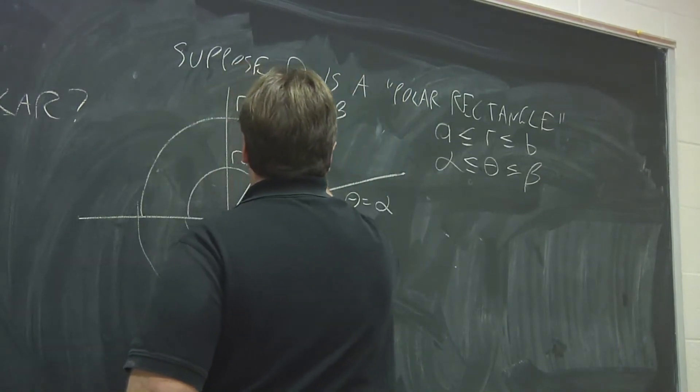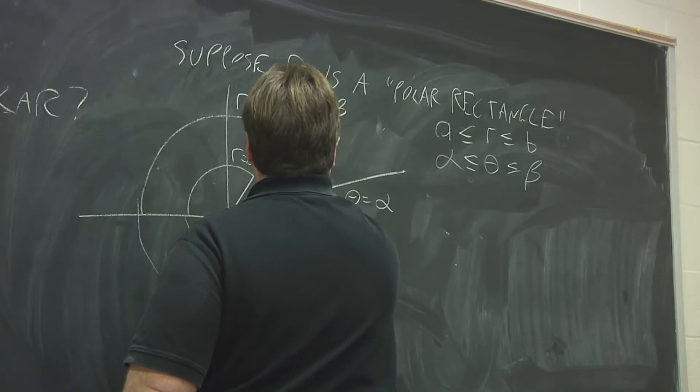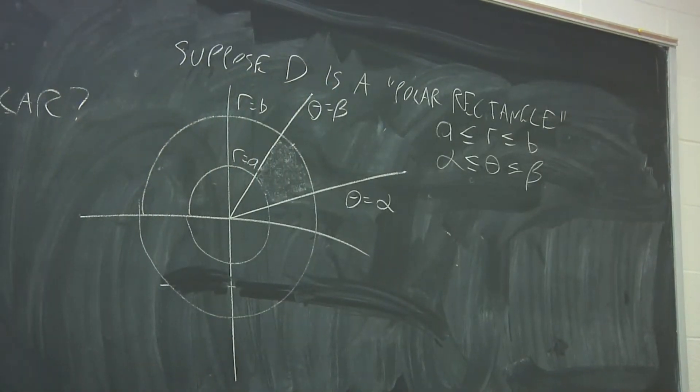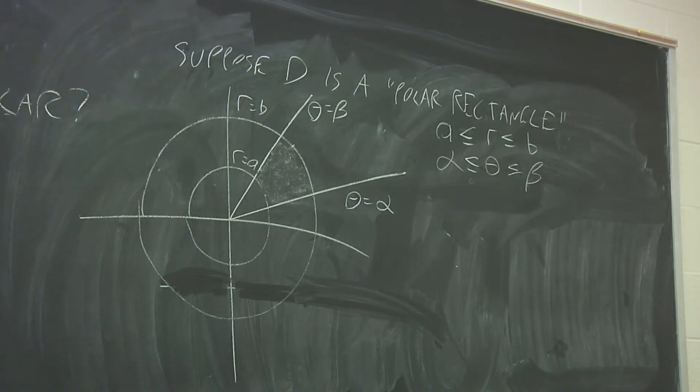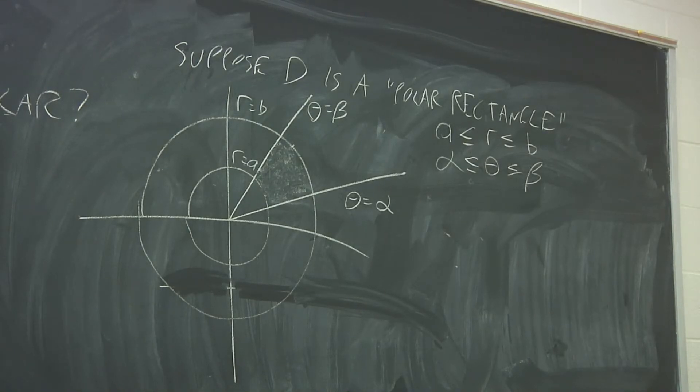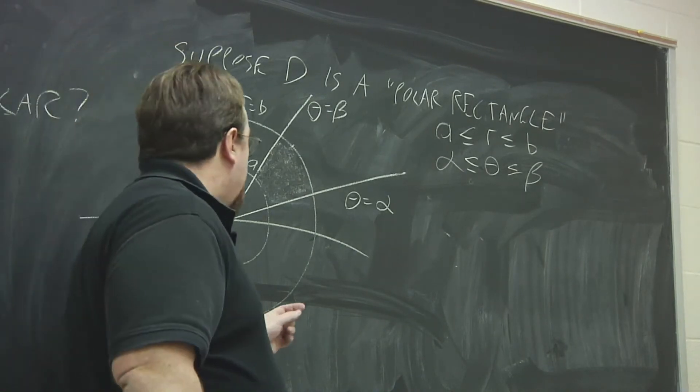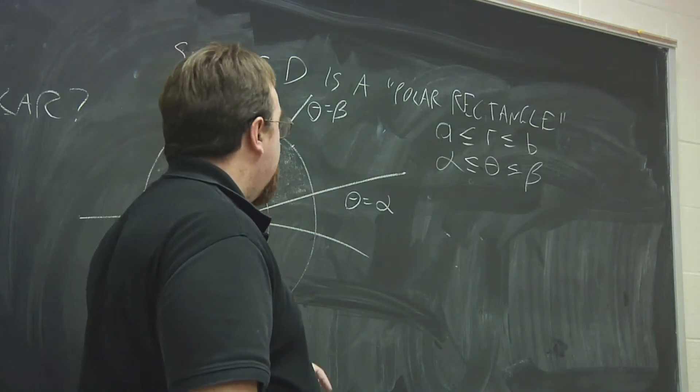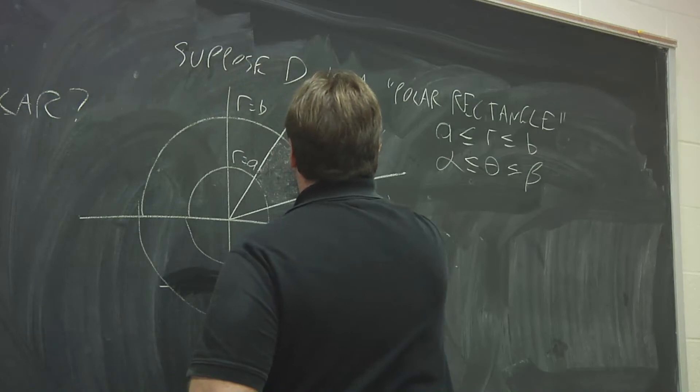So this region right here that I'm shading, that's an example of a polar rectangle. Now what do you get when you have constant boundaries for your variables r and theta? Whereas when you restrict x and y in the same way, what you get is an actual rectangle. So how would you integrate over a region like this, keeping everything in polar coordinates? Let's call this region D.